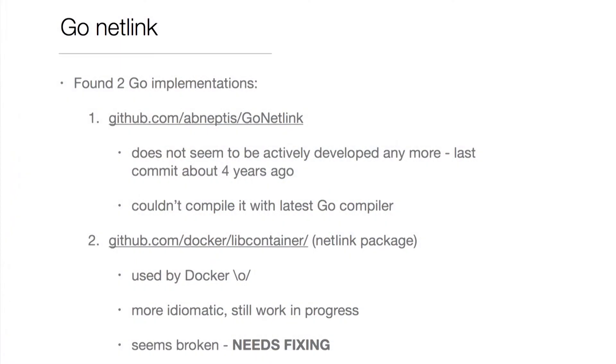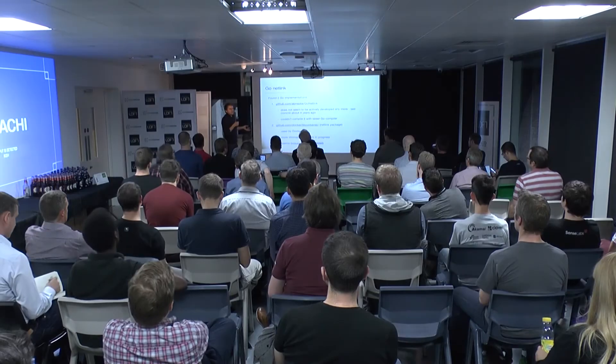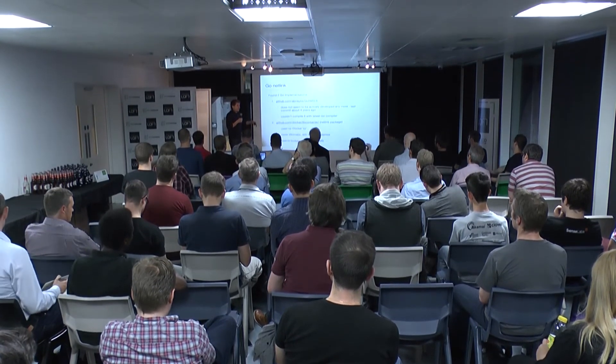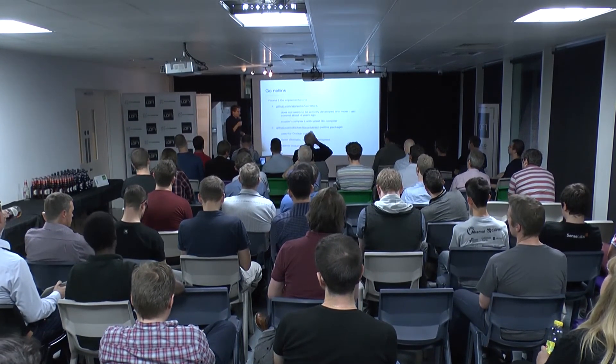I started looking for Go bindings for Netlink and I literally could find only two packages. One is called Go Netlink, but it was developed about four years ago and hasn't been touched since — it was released as open source, written in a very early version of Go. Another Netlink package was the one written by the Docker guys — that's more idiomatic Go, but it's still massively a work in progress, and you can see that because it's completely broken. It works to a certain degree, but once you want to do more advanced networking, you can't.